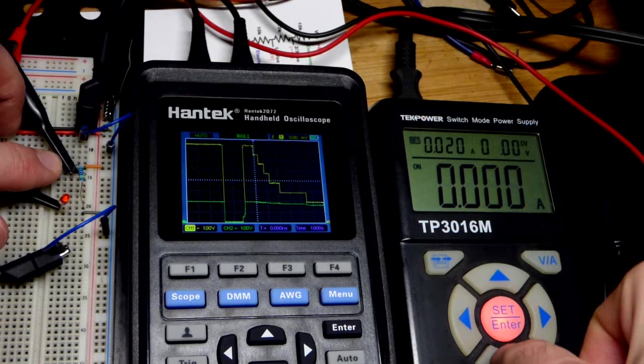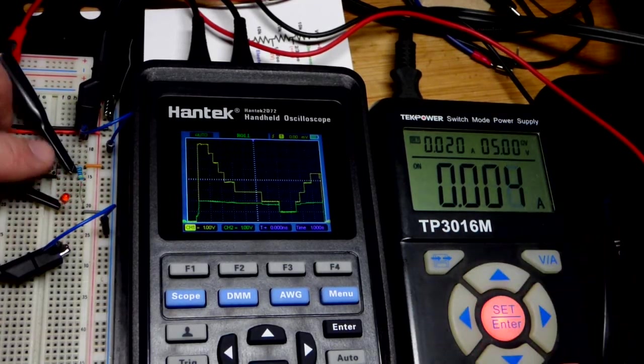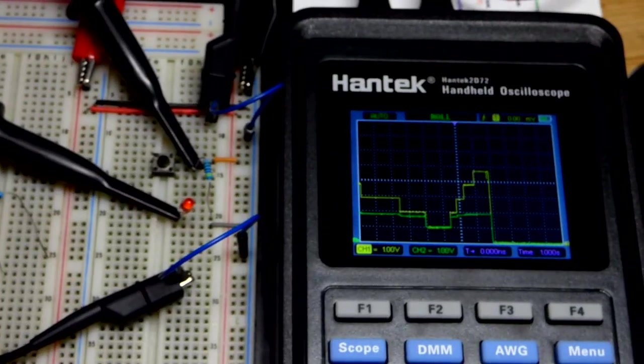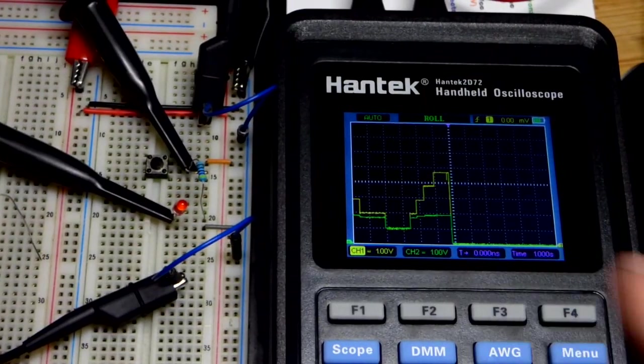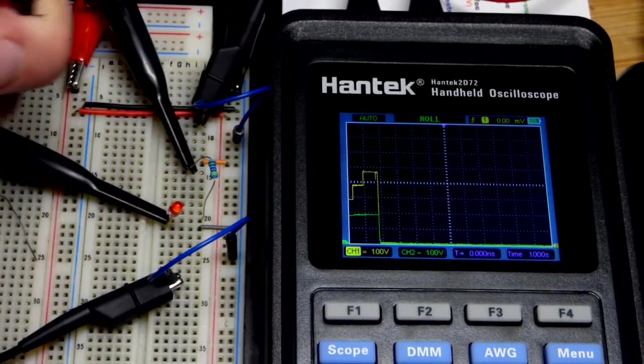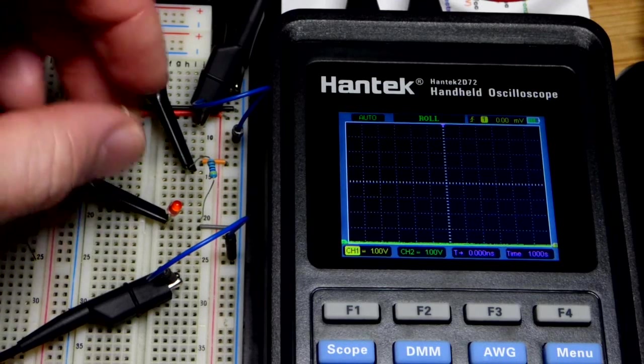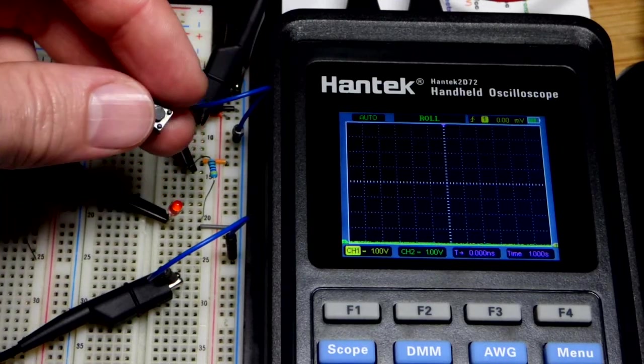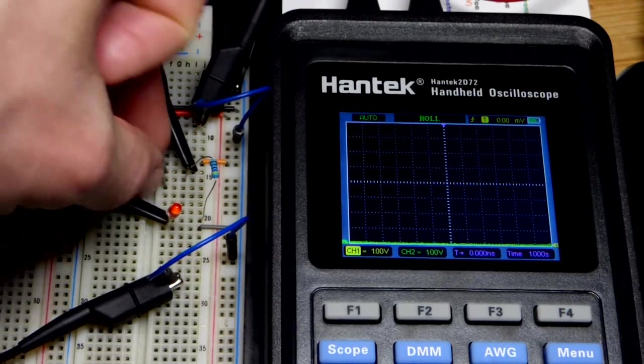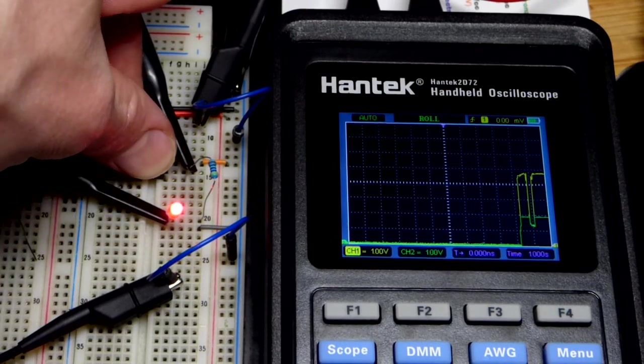When it goes down to no voltage across the components, that's because the switch is open - it's like it doesn't exist, there's a gap. There's no voltage when the switch is open. All the voltage is across the switch, which we're not measuring. We're just measuring the voltage across the LED and the voltage on the other end of the resistor.